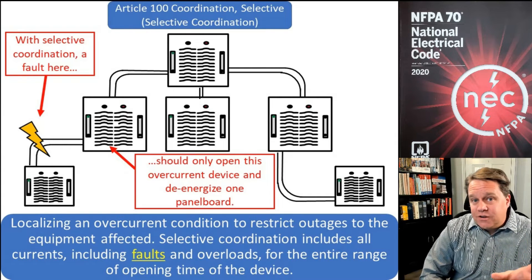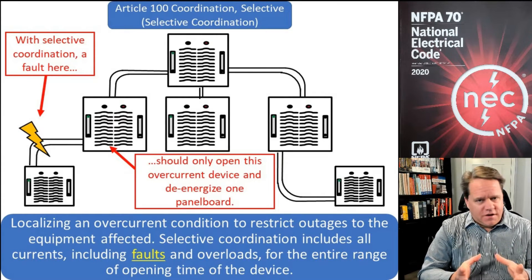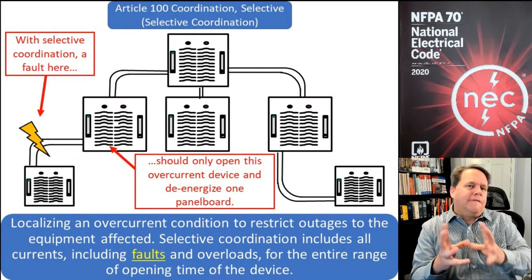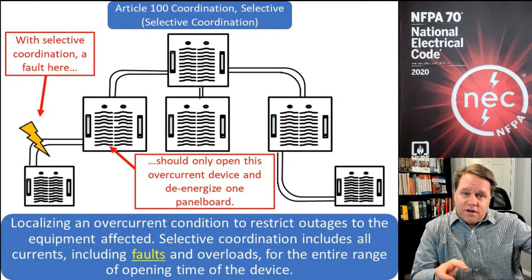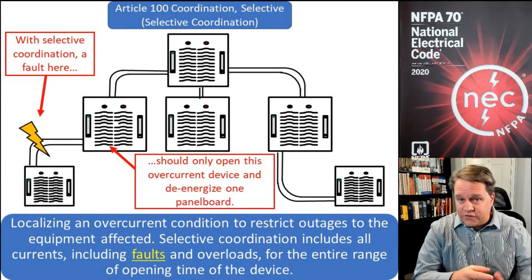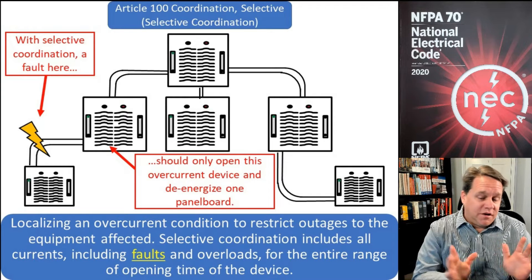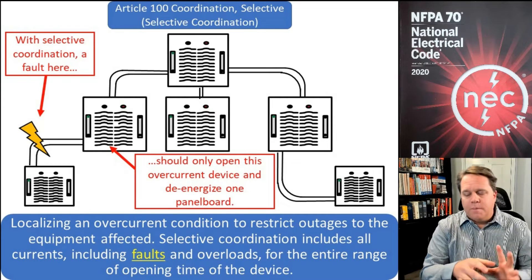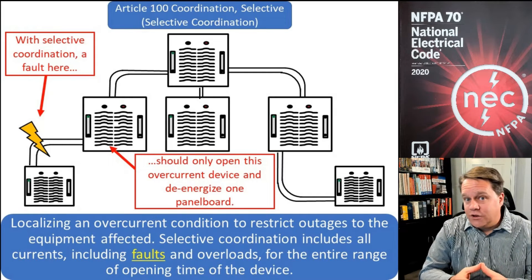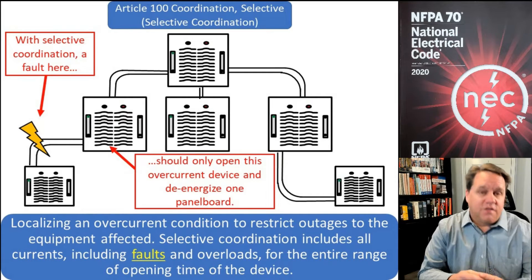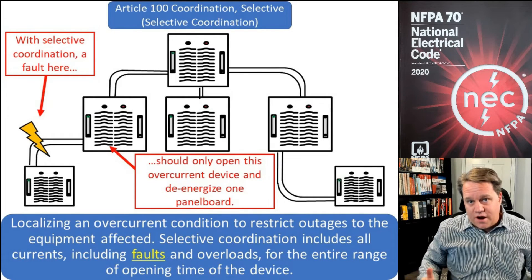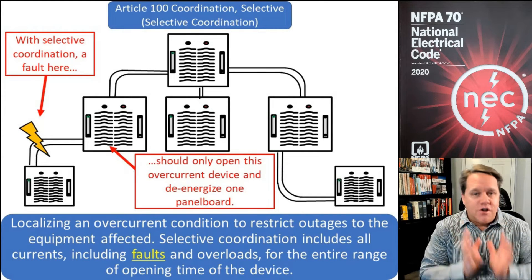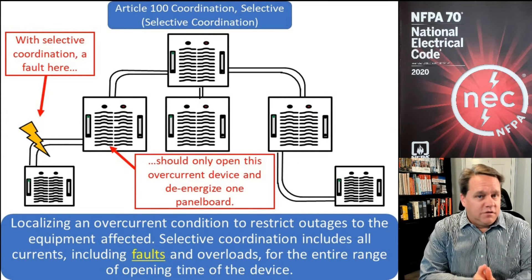Selective coordination — have you ever had an incident where a fault occurred and a 20 amp breaker should have been the one to trip, but instead an upstream breaker tripped and you lost the entire panel? That happened to me. A 20 amp circuit should have definitely tripped, but instead the 800 amp main outside tripped and we lost power to the entire building. That is an example of not having selective coordination.